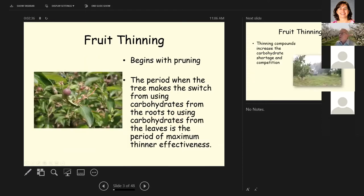Fruit thinning begins with your pruning. You prune a lot of flowers off the trees when you prune them, but you can't prune enough to adjust the fruit load on your tree. So it's a combination of pruning and chemical thinning in most cases. It's too expensive to thin by hand in most cases.